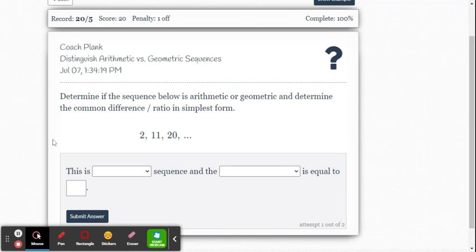Look at one more sequence, 2, 11, 20. So does it have a common difference? Let's see. 20 minus 11 is 9. 11 minus 2 is 9. So they're just adding 9 each time. So this is an arithmetic sequence. It has a common difference, and that difference value is 9.